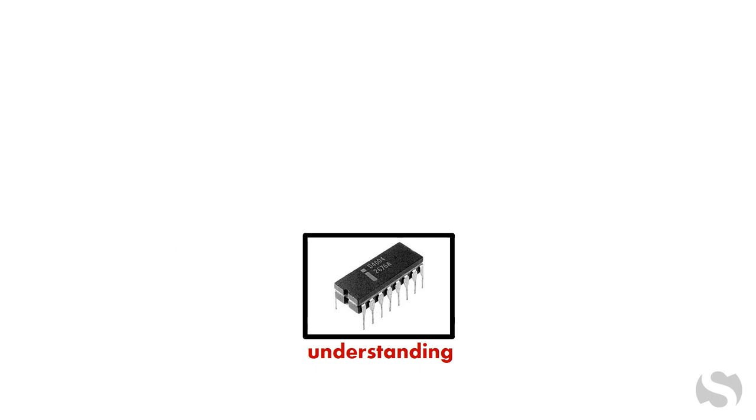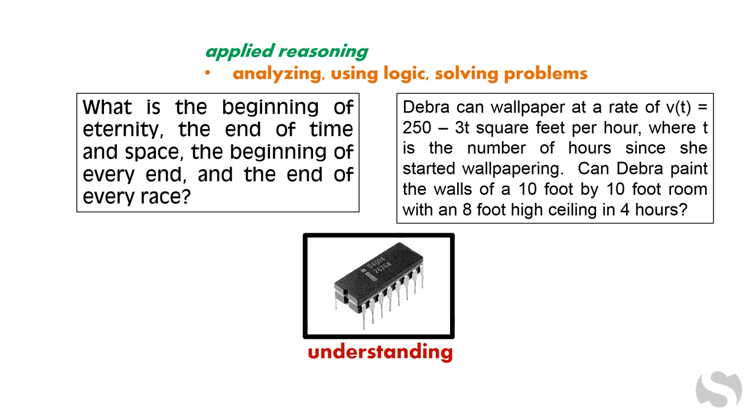The mind's microprocessor comprises several abilities related to understanding. Applied reasoning is analyzing and using logic to solve complicated problems that require more than just recalling information from memory. Problems are found in math, science, and liberal arts classes.